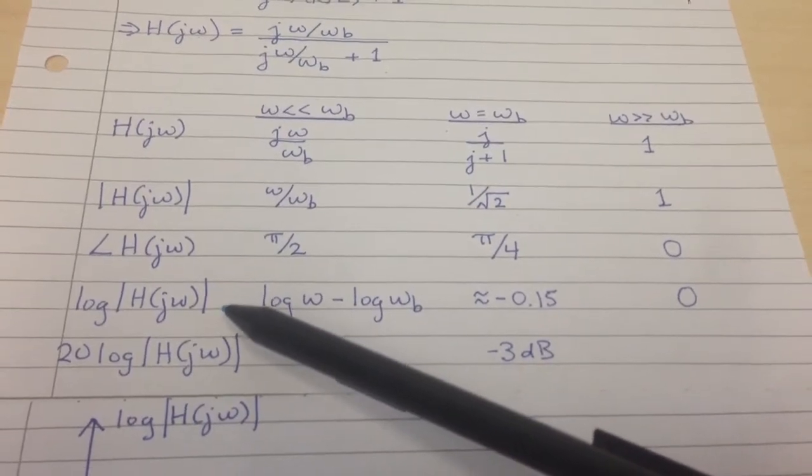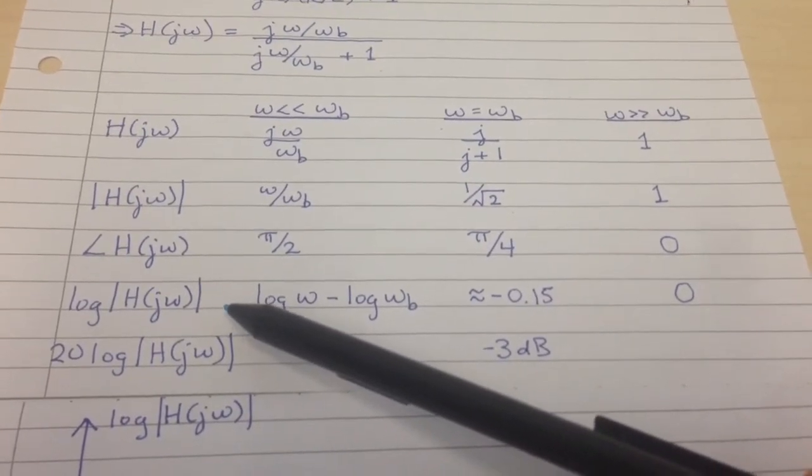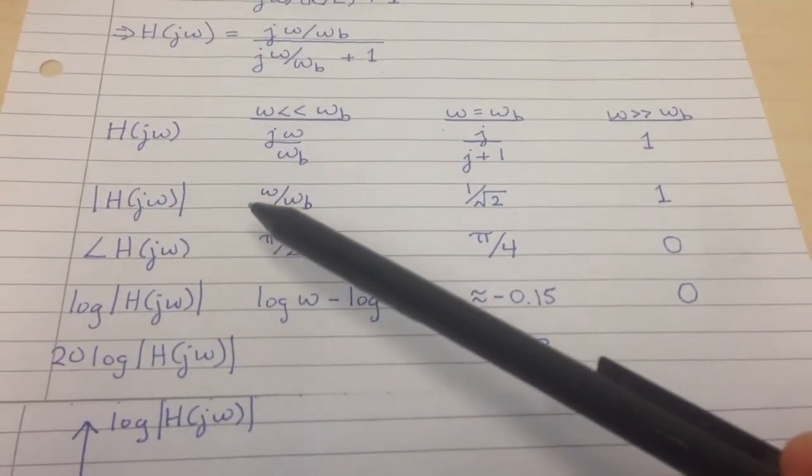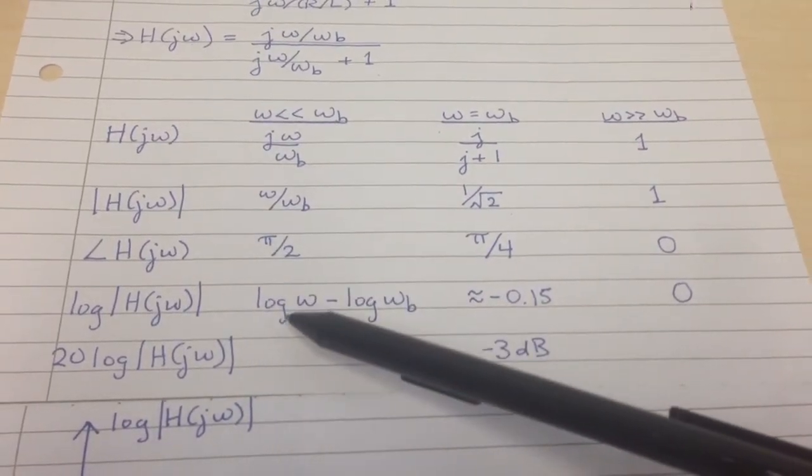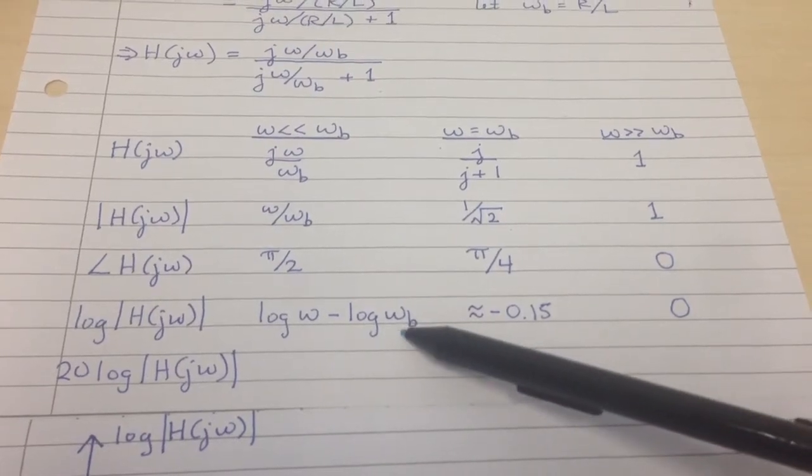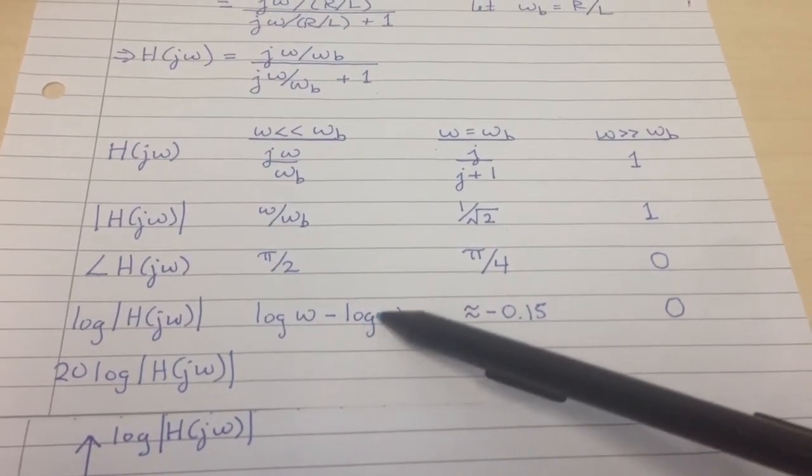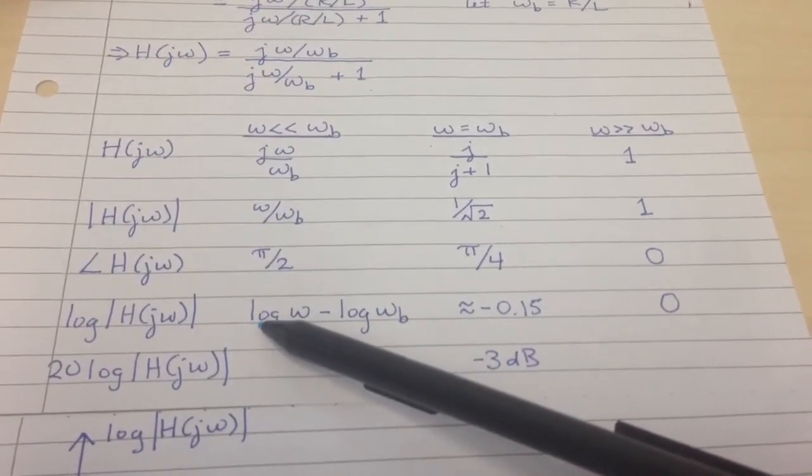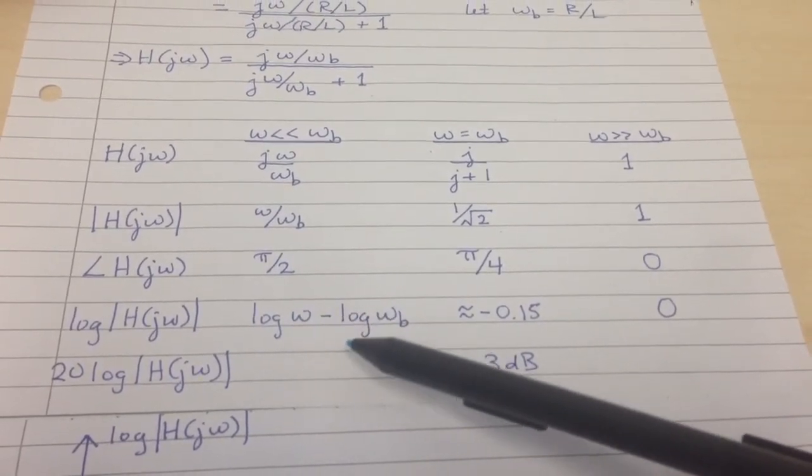It's also convenient to take the logarithm. That allows us to see the behavior of everything in a single graph. Taking the log of H of j omega, we get log of omega minus log of omega B. This is just a constant we can ignore. The main thing here is that it goes like log of omega, and you'll see why that's important in a second.